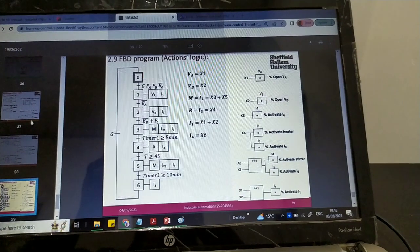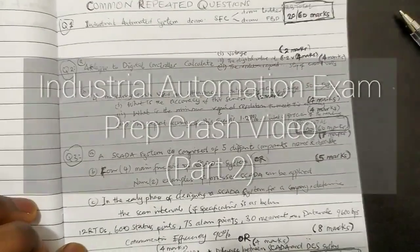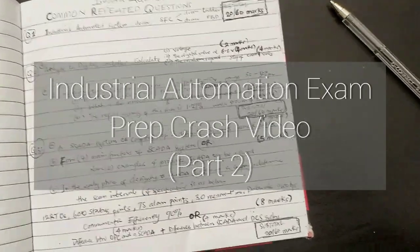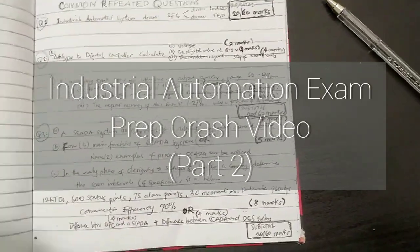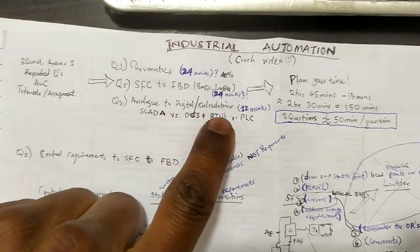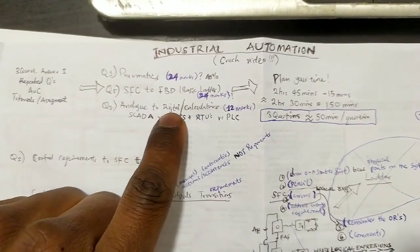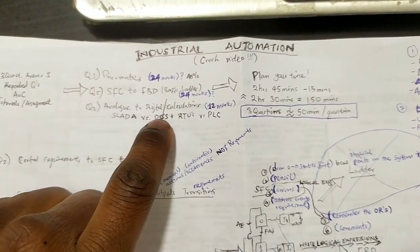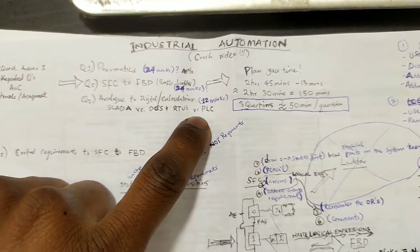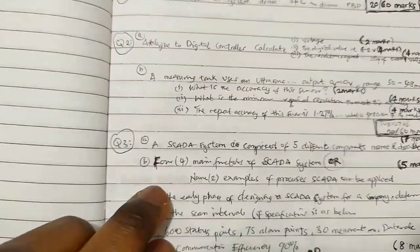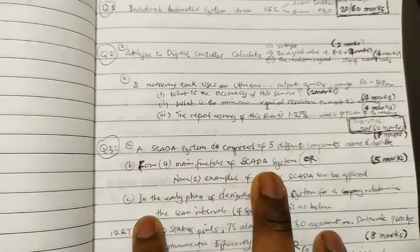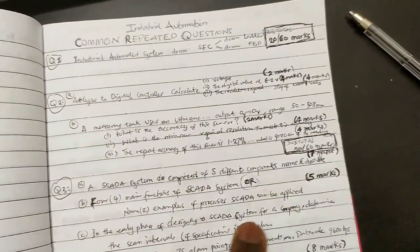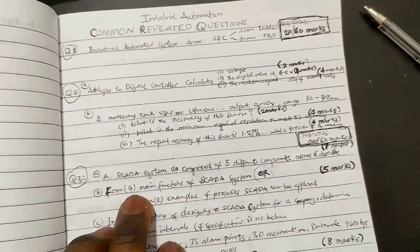Let's go to the next question which is about SCADA. I think we've talked about that here. This third part—let's touch on analog to digital conversion, calculation, SCADA vs DSC, and RTUs vs PLCs. Questions that have been repeated are about SCADA system components.